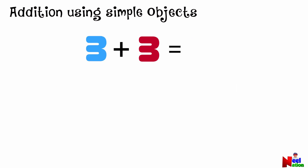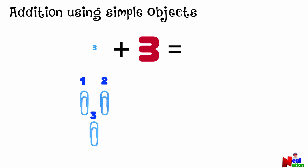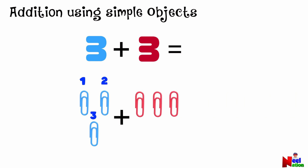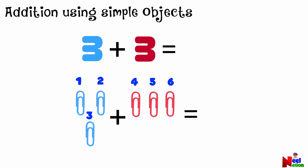What is three plus three? Let's use some paper clips this time. Start with three of them. Add three more paper clips. To find the total, let's count starting after three: four, five, and six. That means the total of three plus three is six.